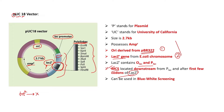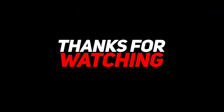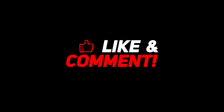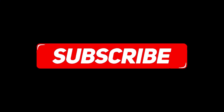One of the main uses of the PUC18 vector is in blue-white screening. We will have a separate video on that topic, but for now, remember that blue-white screening is a test used to identify recombinant clones from non-recombinant ones. It is because of the presence of the lacZ gene — and its coding for the enzyme beta-galactosidase — that we can perform blue-white screening with PUC18.